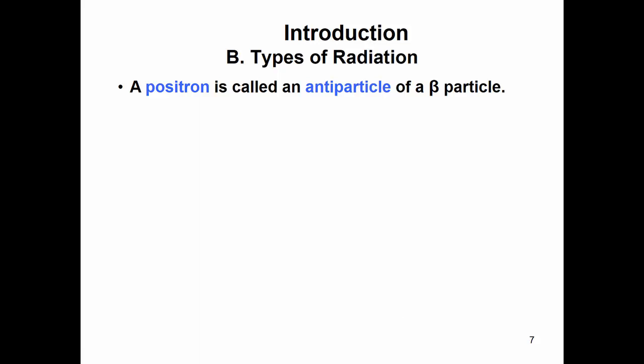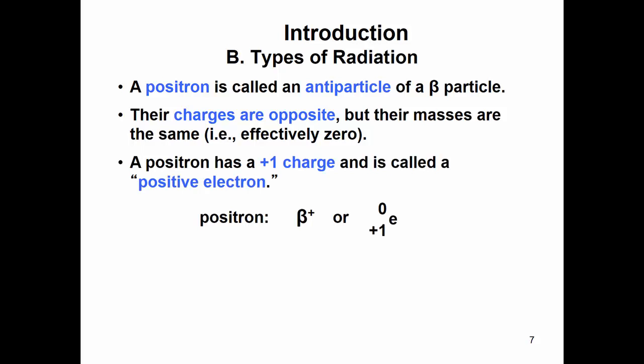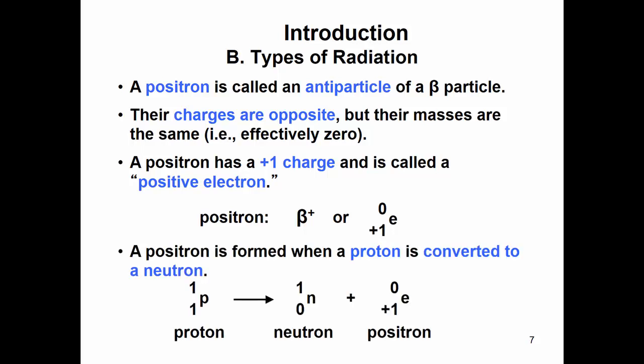A positron is an antiparticle of the beta particle, so it's opposite. Positron means we're going to have a positive charge. The charge is opposite but their masses are the same, so effectively zero. So positron has a plus one charge. It's called a positive electron. Here's your beta plus, even though it's a positron. But the only difference is we have a plus one instead of a negative one. A positron is, think of it as a positive opposite or anti of an electron. And it's formed in the opposite way, so we can take a proton and convert it to a neutron and a positron.